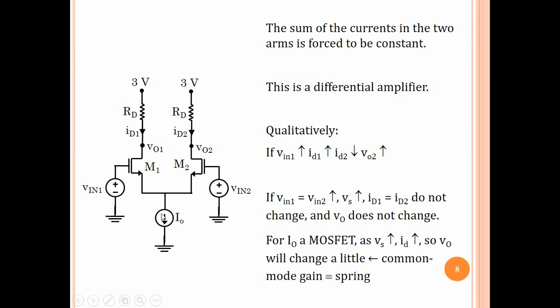But now, if I0, instead of it being an ideal current source, is a MOSFET, so we are going to put a MOSFET here, then if we increase both V_in1 and V_in2 equally, then the source voltage will increase. And as a result of the increase in the source voltage, channel length modulation of the MOSFET here will cause the current to increase a little bit. So, the output voltages will also decrease a little bit, just like the spring in the balance analogy. And that, of course, is the common mode gain, which is caused by the non-ideality of the current source.